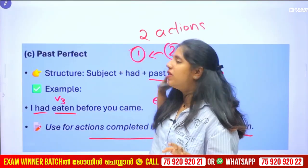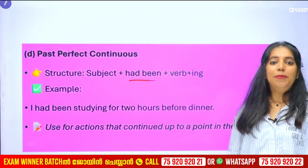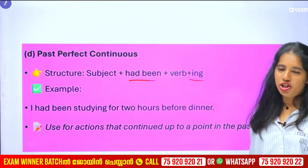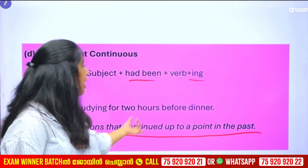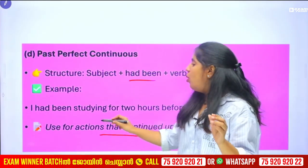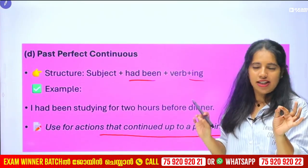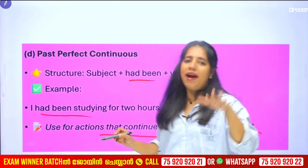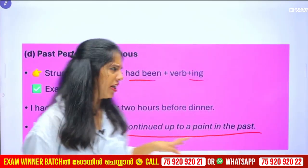Past perfect continuous — how we use it: 'had' plus 'been' plus the '-ing' form. Actions that continued up to a point in the past. For example, I had been studying for two hours before dinner. 'Before dinner' is the past point of reference.